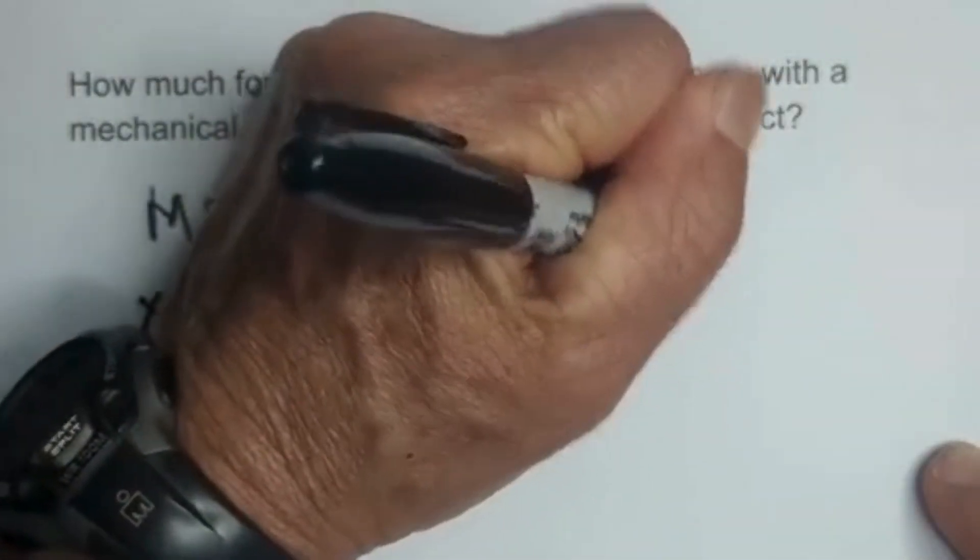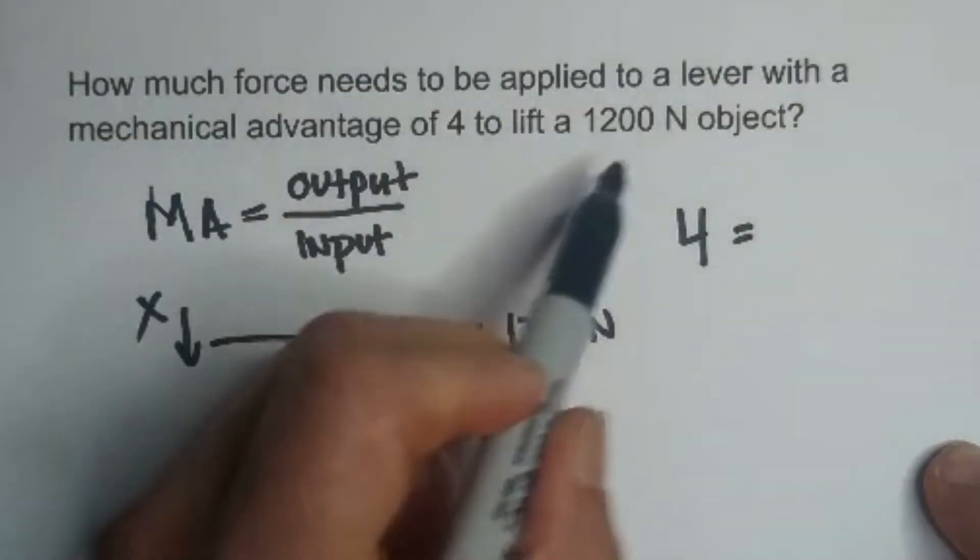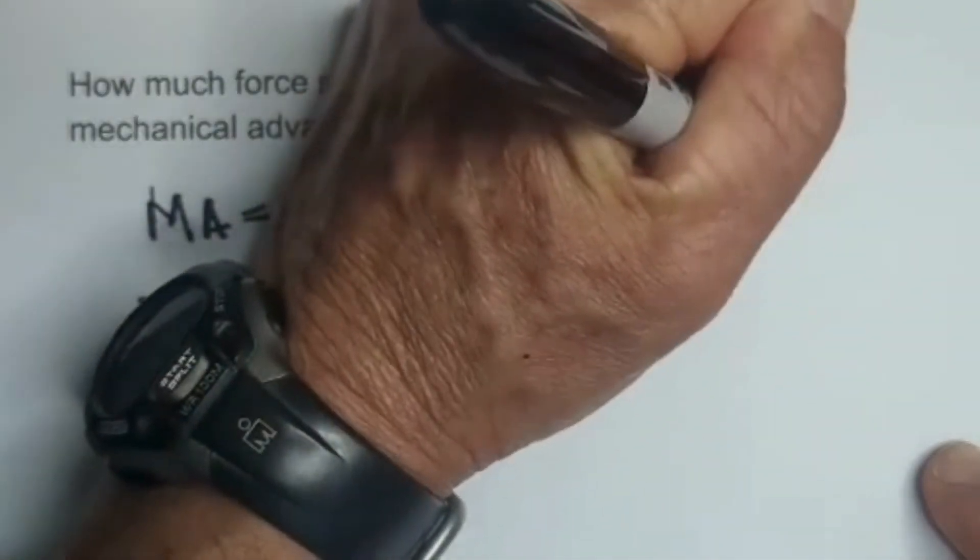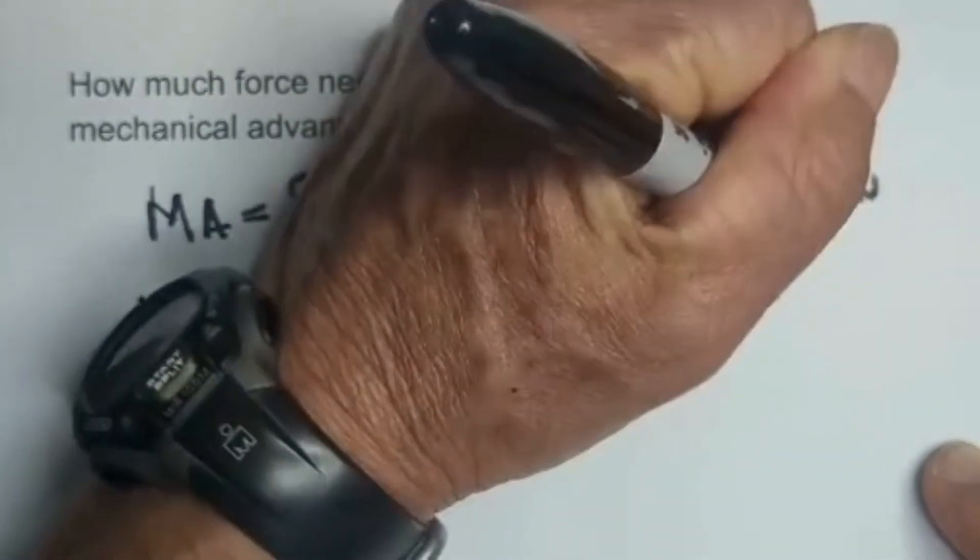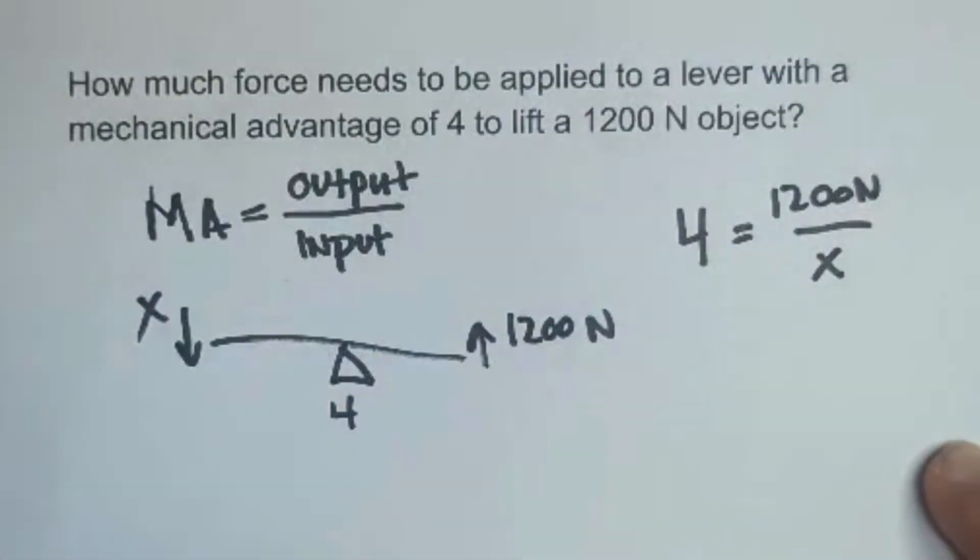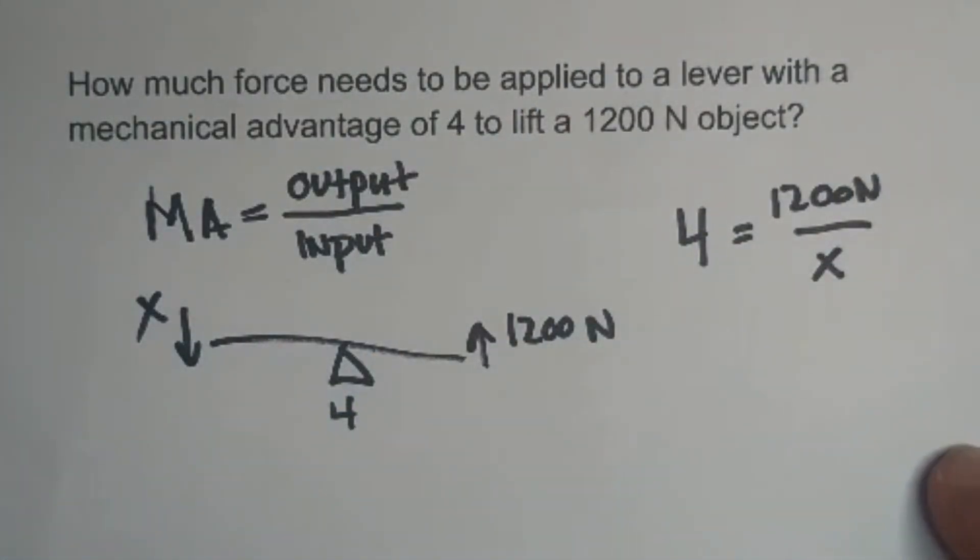We know that the MA is 4. We do not know the output is 1200 newtons, and we don't know what input. We don't know how much effort we need to apply.